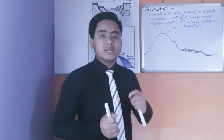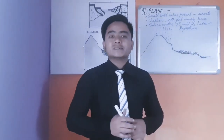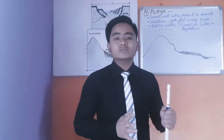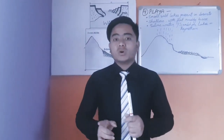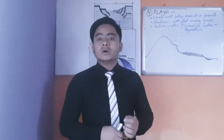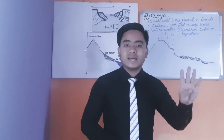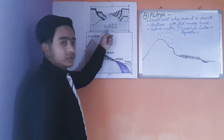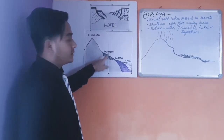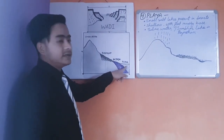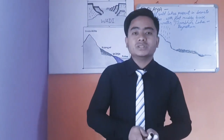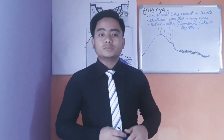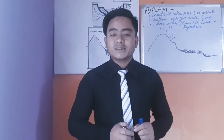In this lesson we mainly discussed landforms produced by the combined action of wind and running water. Within this topic we discussed four types of landforms: wadi, pediment, bajada, and playa. I hope you have understood this lesson. Hope to see you all in the next class. Stay safe, stay learning. Thank you.